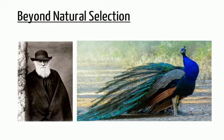The peacock's plumage is not only costly to grow in terms of energy, but also makes the peacock an easier target for predators. To answer this conundrum, Darwin proposed the idea of sexual selection.